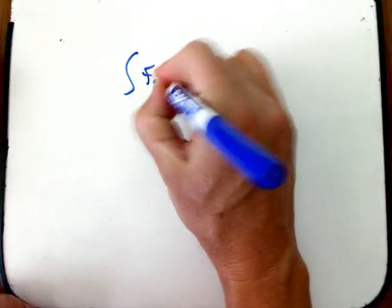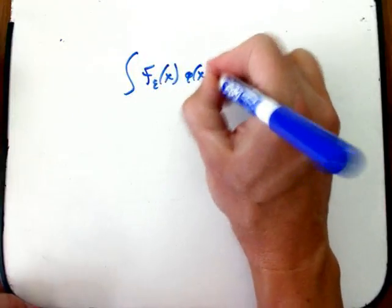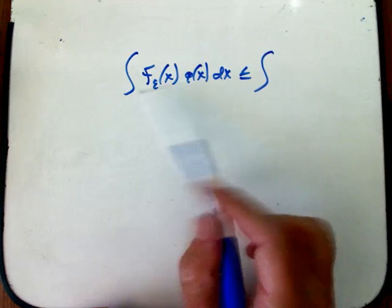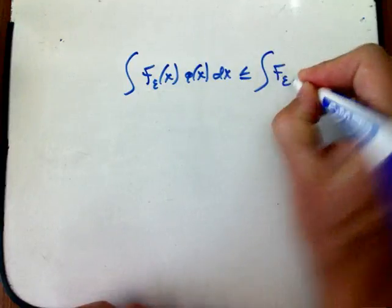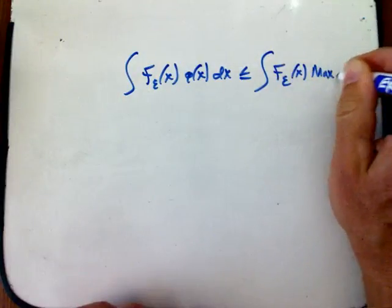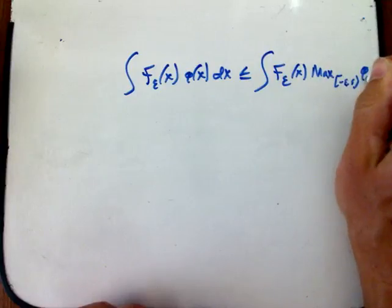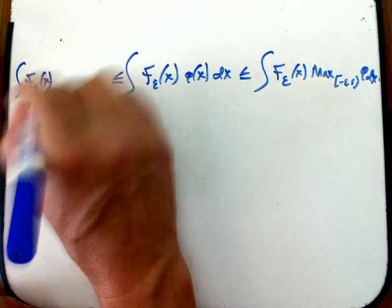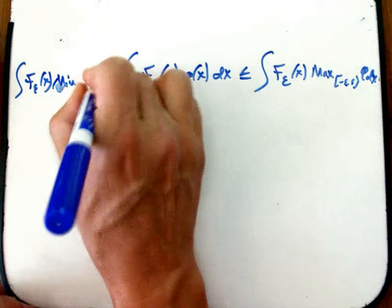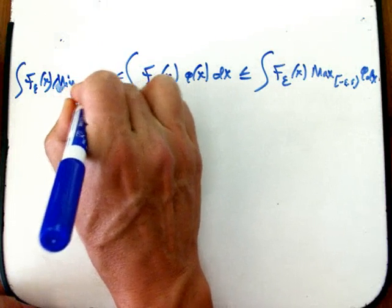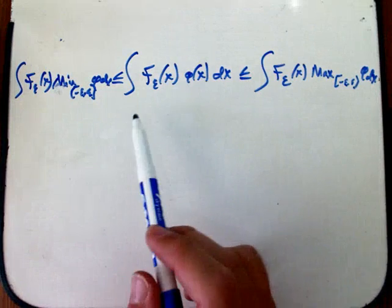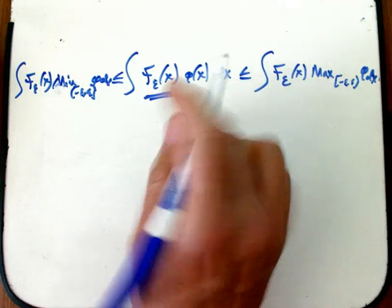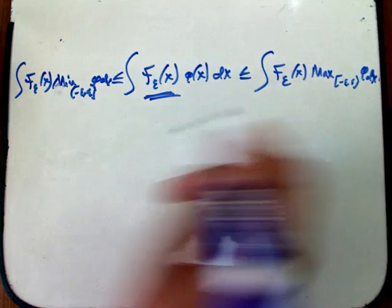And this is not hard to show just by monotonicity of integrals. We know that the integral of f_epsilon of x phi of x dx is going to be less than or equal to—just take some function that's guaranteed to be bigger than this on the appropriate interval. I'm just going to replace this with its maximum on that interval. That's a constant function. And similarly, to get something that's guaranteed to be smaller, I just replace it with its minimum, the minimum of phi on minus epsilon to epsilon.